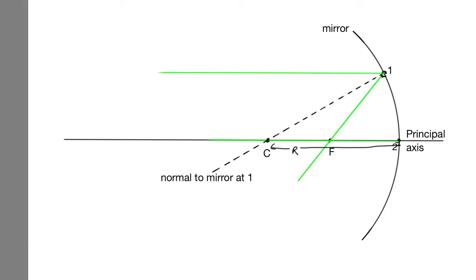What I've drawn on is two light rays. So there's one hitting the mirror at 1. It's coming in parallel to the principal axis. And if it comes in parallel to the principal axis, then we know that it is reflected through the focus because that's how we defined the focus.